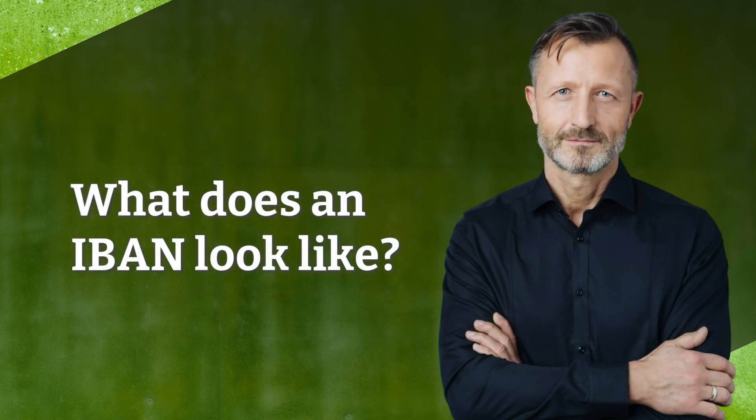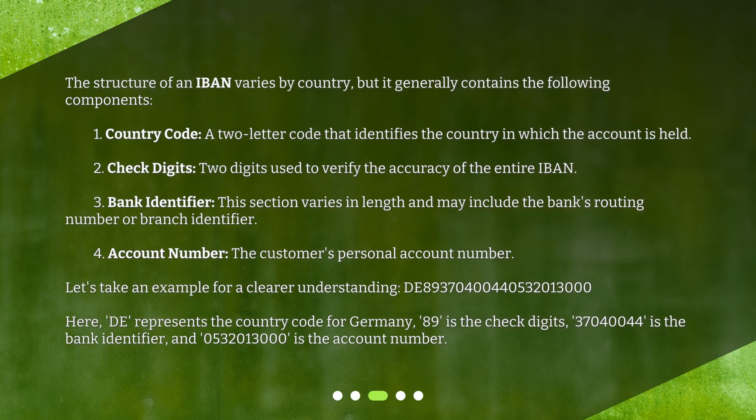What does an IBAN look like? The structure of an IBAN varies by country, but it generally contains the following components. 1. Country Code: a two-letter code that identifies the country in which the account is held. 2. Check Digits: two digits used to verify the accuracy of the entire IBAN. 3. Bank Identifier: this section varies in length and may include the bank's routing number or branch identifier. 4. Account Number: the customer's personal account number.